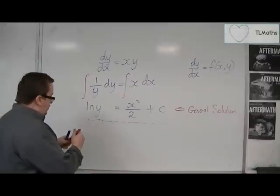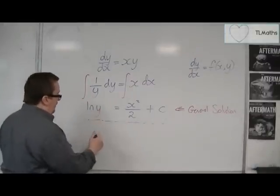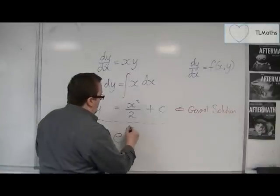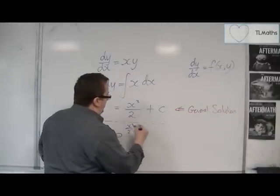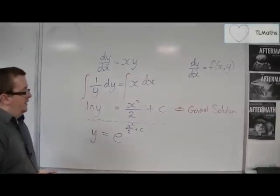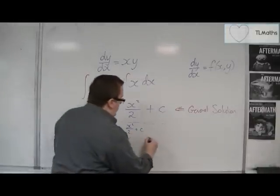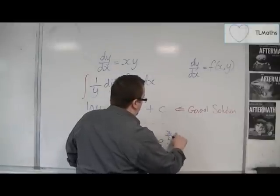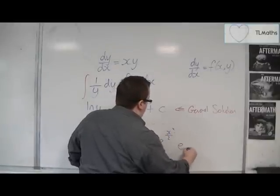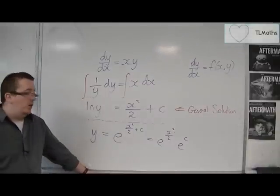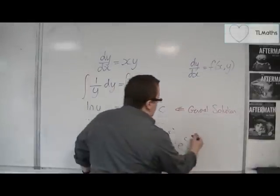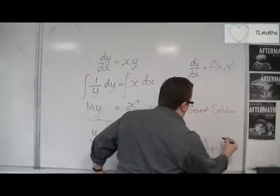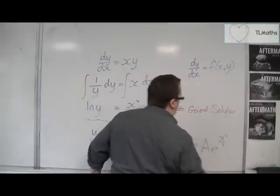Now, in this example, of course, we can get y equals, because we can e both sides. And so we could have e to the power of x squared over 2 plus c, like so. And you could then write this as e to the x squared over 2 times e to the c. Because that's how indices work. And then e to the c is just any old number. So you could replace that with another constant and have that as a e to the x squared over 2.